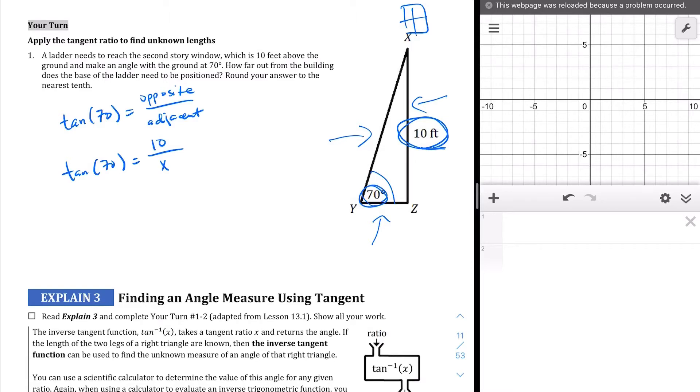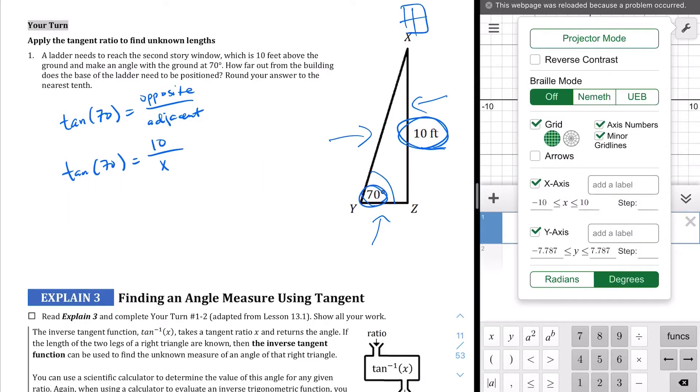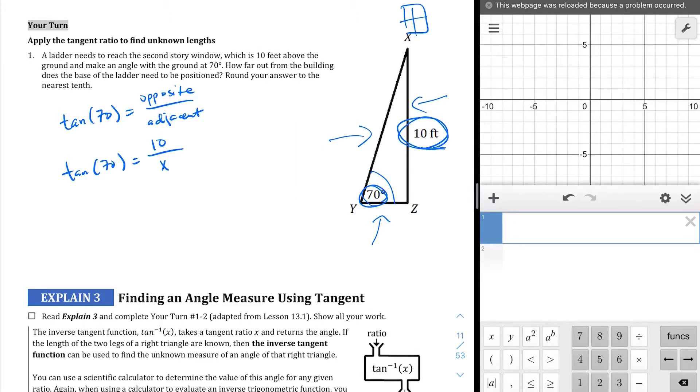I'm going to pop on over to the Desmos calculator real quick, and we're going to be looking for the tangent of 70. One thing you want to do before you do anything is you want to make sure your calculator is in degree mode. When you're using the Desmos calculator, just tap on this little wrench in the top right corner, and just make sure it's not in radians, but that it's in degrees. So the degrees should be highlighted green.